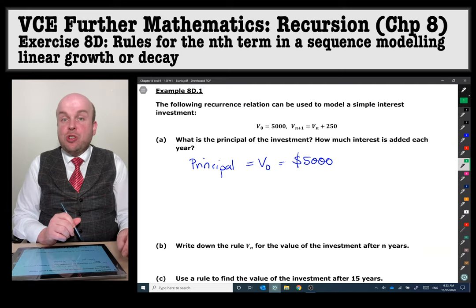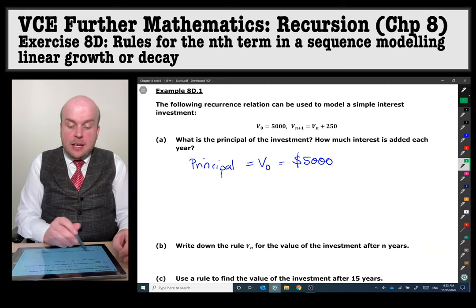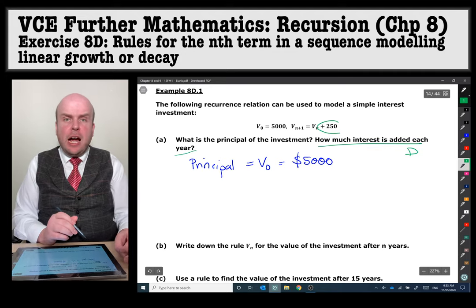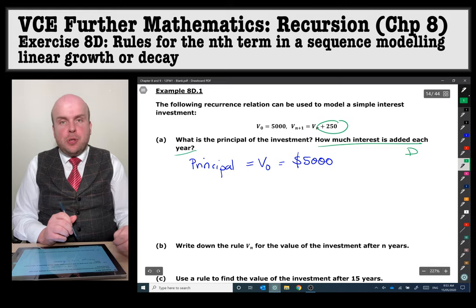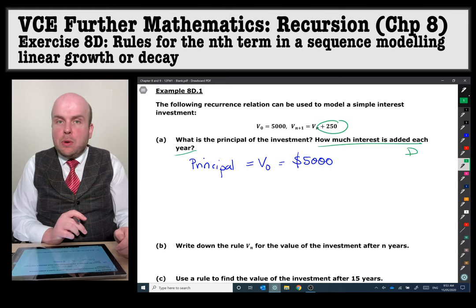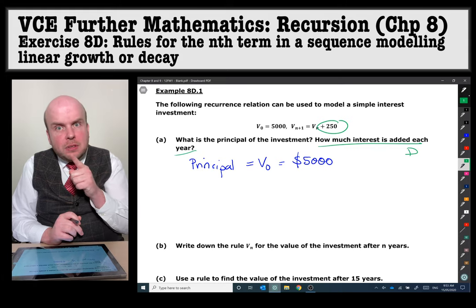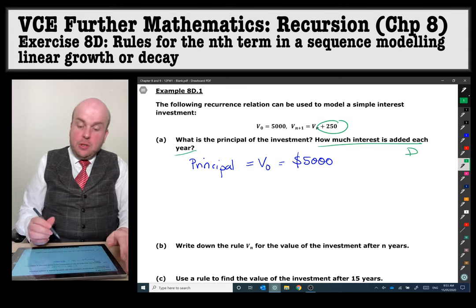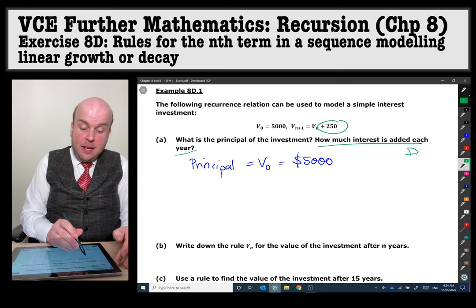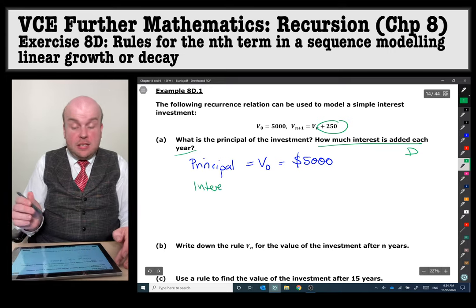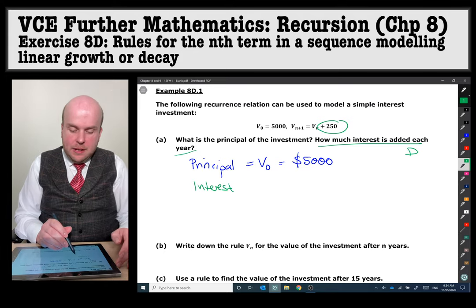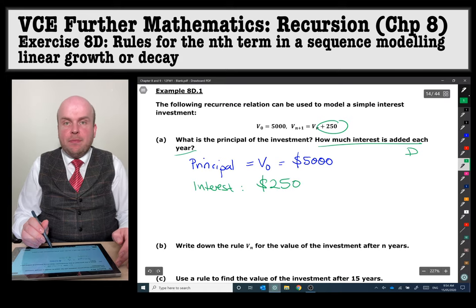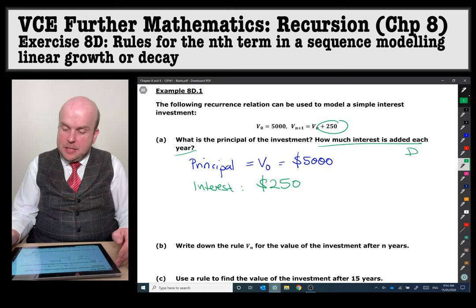How much interest is added each year? So that is the d value. This one here and the d value has already been highlighted here as plus 250. Now you'll notice that the question says how much interest, it doesn't say what the interest rate is. So in that case I can tell you that the amount of interest is literally just that plus 250, so that is 250 dollars.